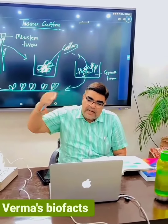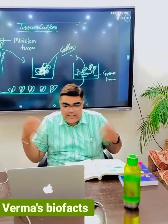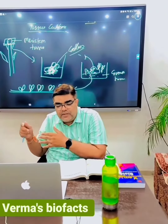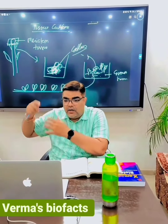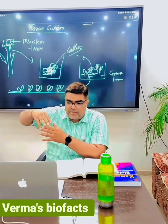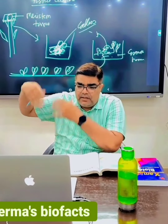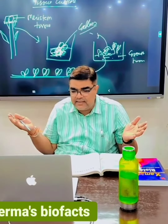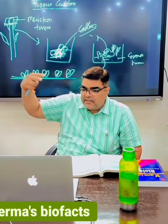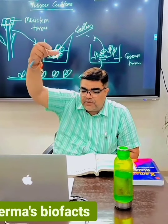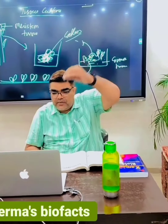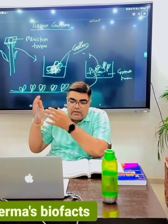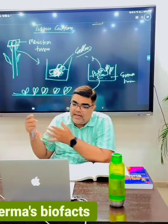Tissue culture is done with the help of the meristematic tissue. What is that? Meristematic tissues are immortal and are present on the apical stems, apices of the stem, root, and leaf. Just cut the meristematic tissue from those tips and put it into an artificial medium where it grows into a group of cells, that is nothing but the callus.